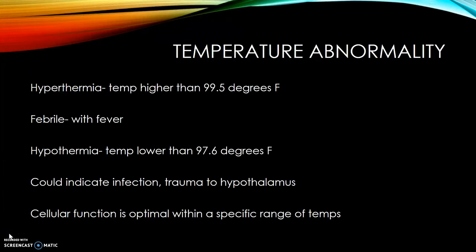Temperature abnormalities include hyperthermia, which means a temperature higher than 99.5 degrees Fahrenheit. Febrile means with fever. Hypothermia is a temperature below 97.6 degrees Fahrenheit. This could indicate infection or trauma to the hypothalamus. Cellular function is optimal within a specific range of temperatures.